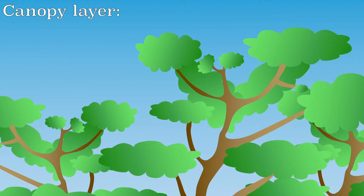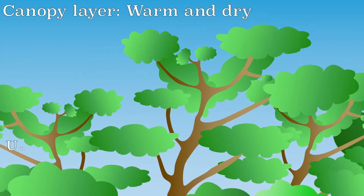The top layer is the canopy layer. The tallest trees intercept sunlight and precipitation. Because the trees intercept most of the sunlight, it is warm. Because it is warm, a lot of water evaporates and therefore it is relatively dry.